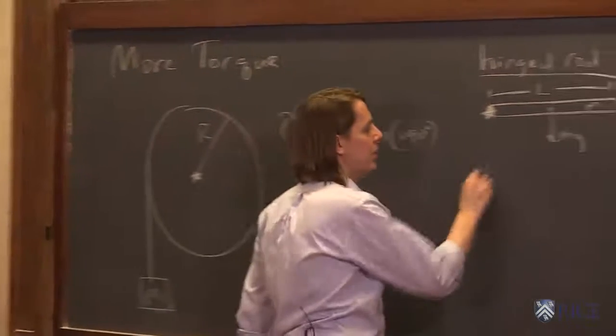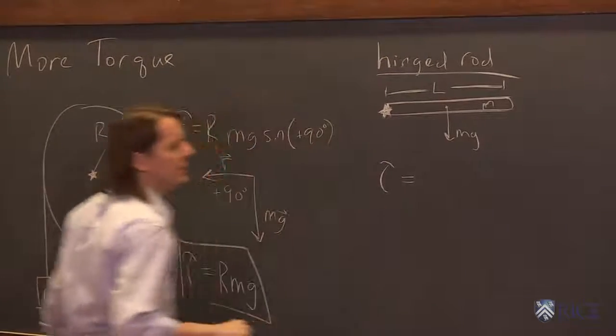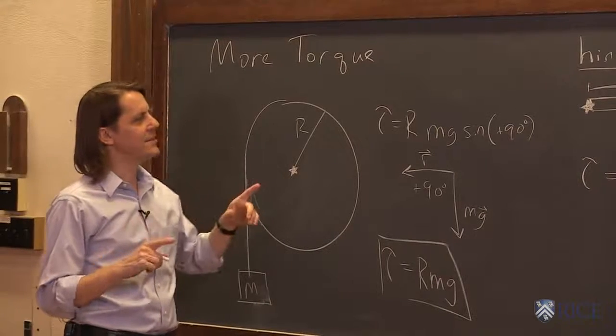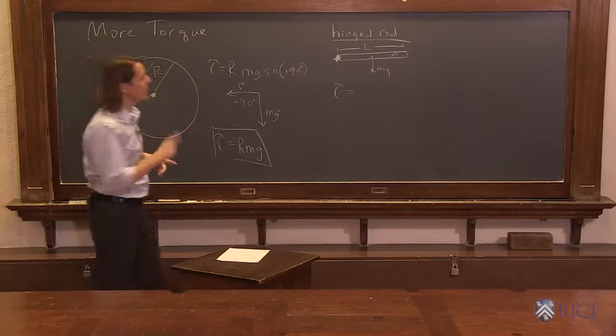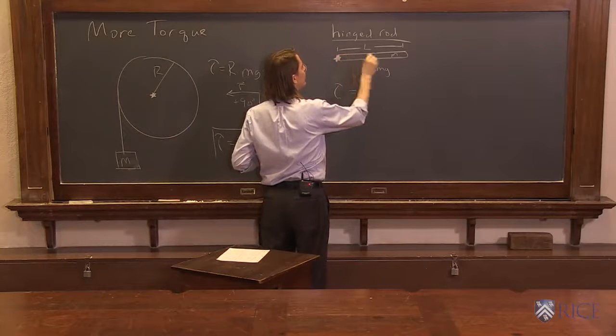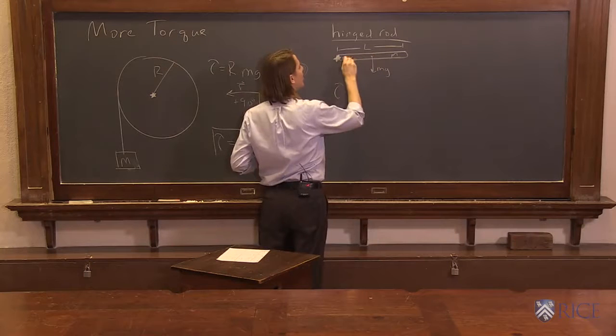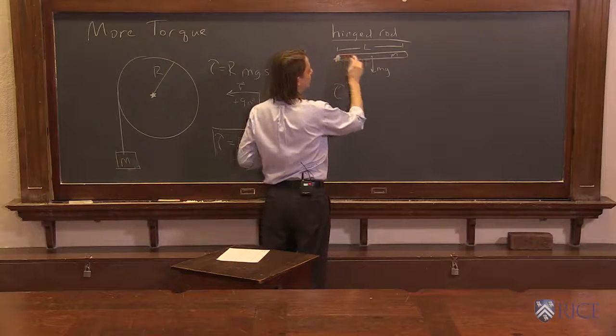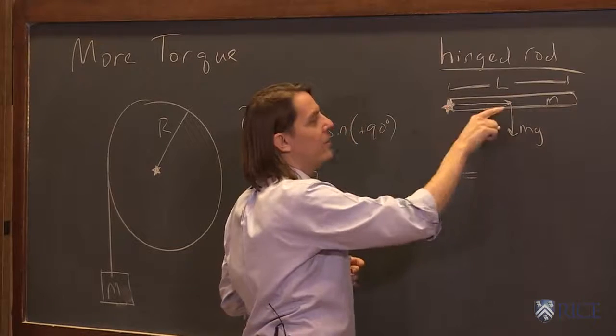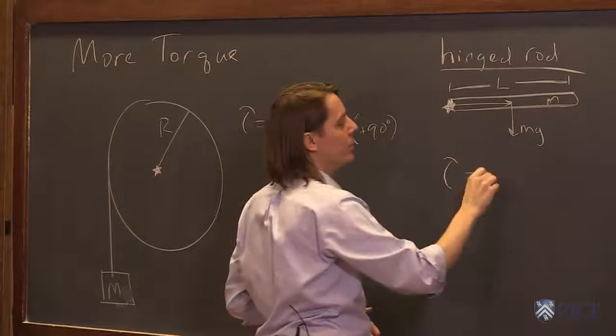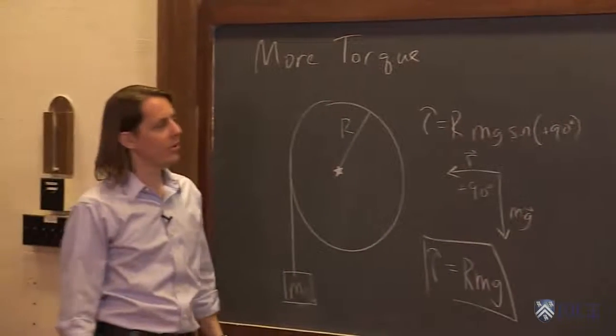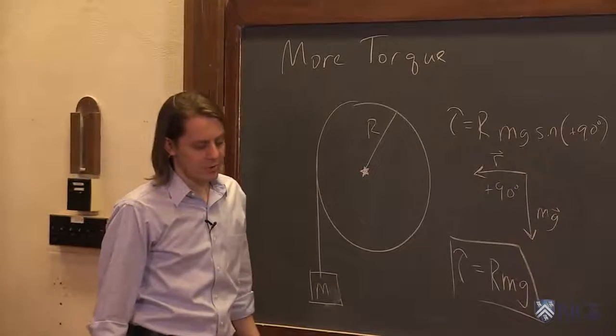So the torque is the distance, the magnitude of r. So in this case, r is always from the axis to the point that the force is applied. And for gravity, you apply it at the center of mass. And for our uniform rod, the center of mass is in the middle. So there is your r vector. And the length of the r vector, the magnitude is l over 2. So it's 1 half l. So that's the r part. And the force is just mg.